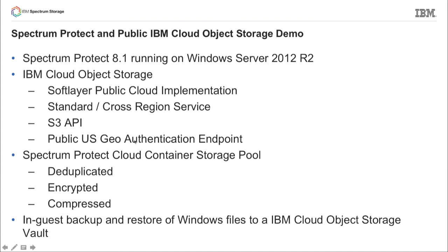We're going to authenticate against a public US geo authentication endpoint when we log in, and we'll set up our storage pools using a Spectrum Protect cloud container implemented in Spectrum Protect version 8.1. We'll be using Windows Server 2012 R2 as our server, though it really won't make any difference to the demo, since you're just defining a back-end cloud container storage pool to Spectrum Protect — the platform it's running on is irrelevant.